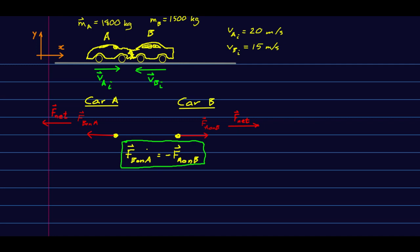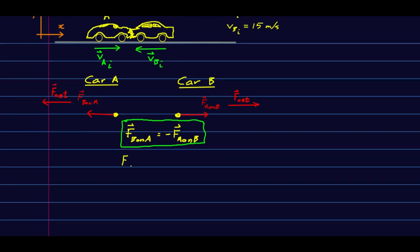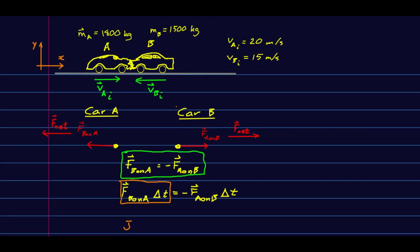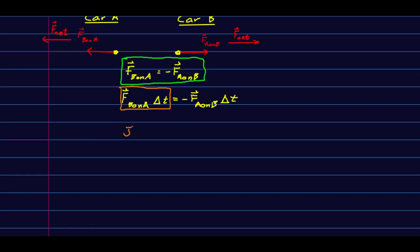However, there are a few things we do know. The time that car B spends colliding with car A is certainly the same delta T as the time that car A spends colliding with B. But we know what an F delta T is - that's a J, an impulse. I'm going to drop the vector symbols because this is a one-dimensional case, so I'm just going to work with right as positive and not worry about vectors. So the impulse that B imparts on A is equal to the negative of the impulse that A imparts on B.